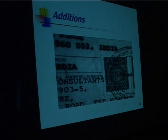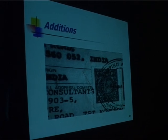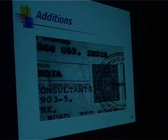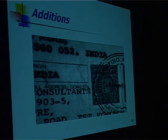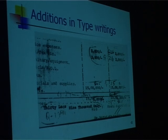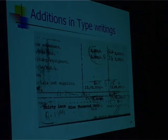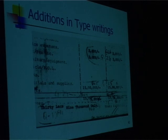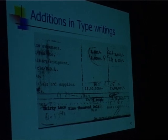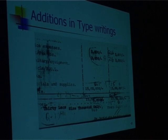This slide shows that typewriting was done when the revenue stamp was already existing on the paper, because a portion of the letter S appears on the revenue stamp. In another case of addition in typed documents, a document meant for 9,000 only was converted into 30,09,000. Entries of 15,00,000 and additional zeros were added — of course with a different typewriter.